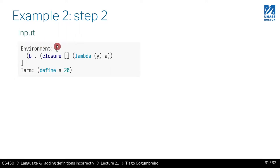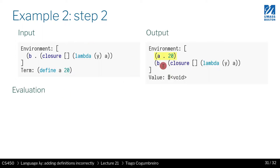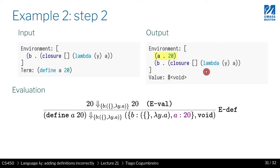In step two, we have the environment with our closure containing an empty environment, and we want to evaluate a assigned to 20. So what we get is a assigned to 20, the same closure, and the result is void. When we evaluate a number, we use the input environment but nothing changes because it's a number.